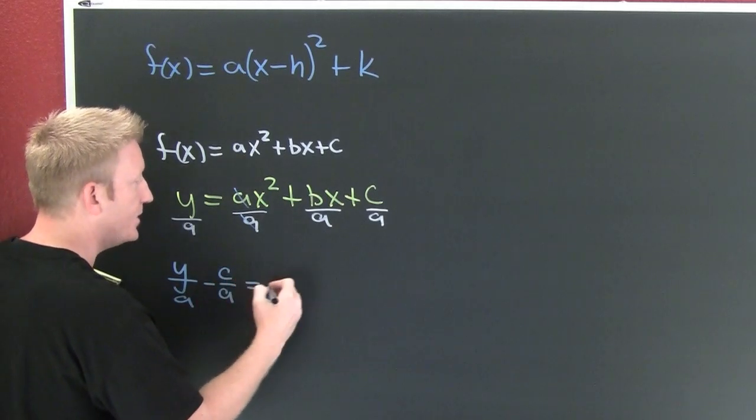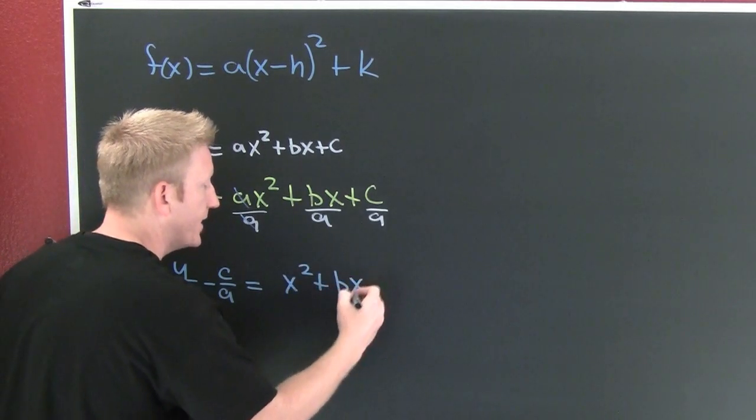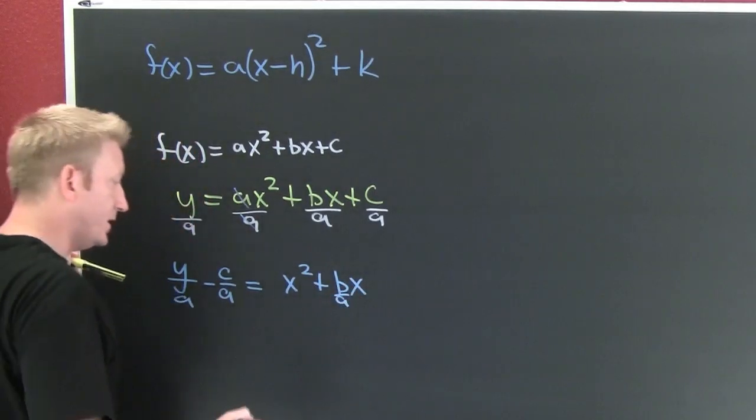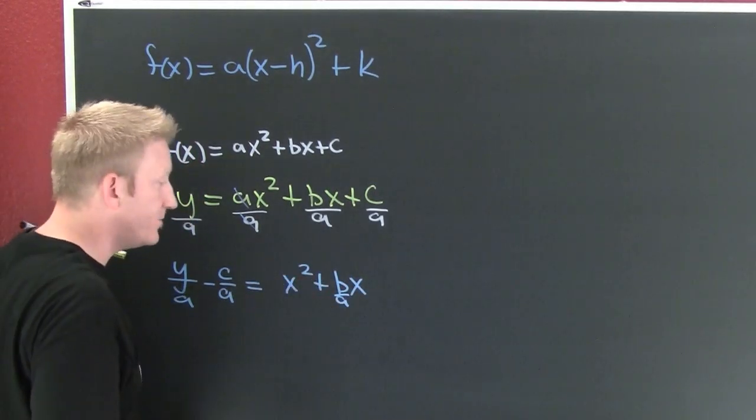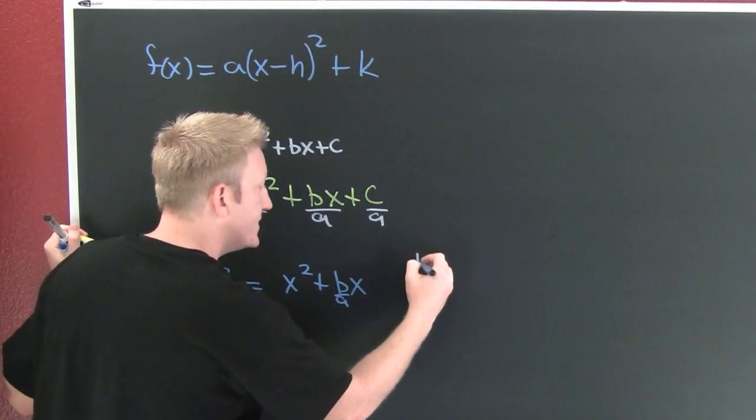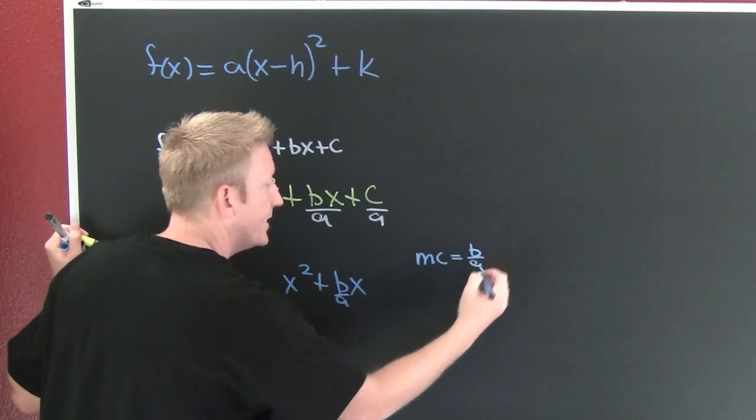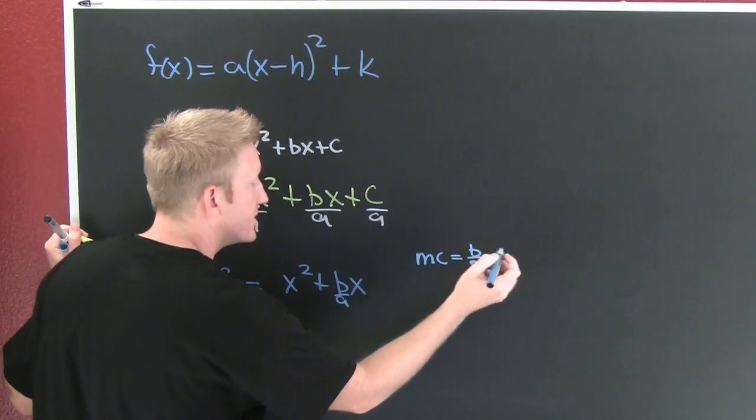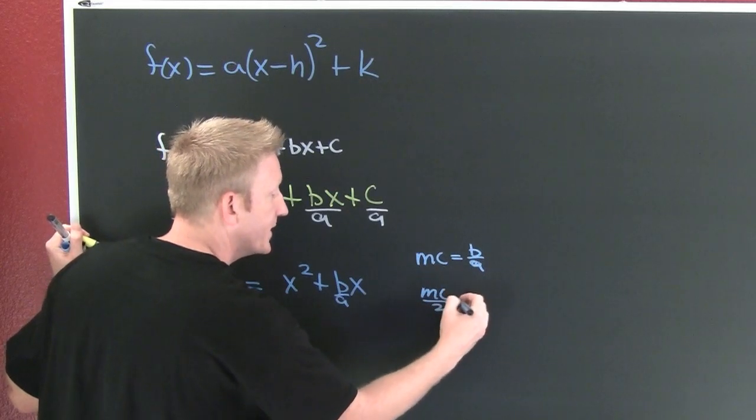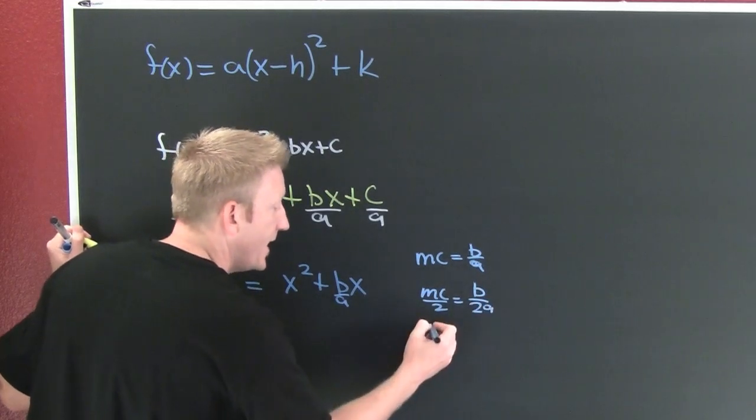Now I want to take half the middle coefficient squared and add it to both sides. Here I see my middle coefficient's going to be b over a. My middle coefficient over two is b over 2a.